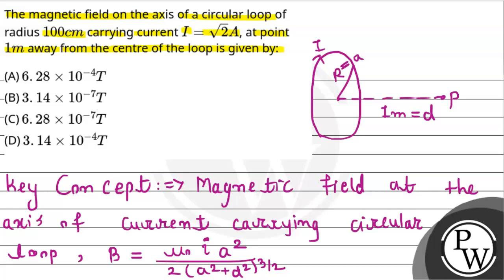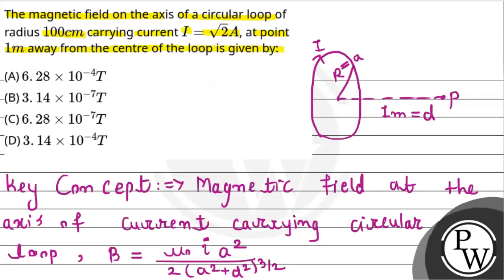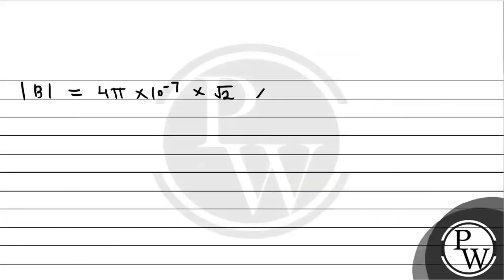The magnitude of magnetic field will be equal to μ₀, which has a value of 4π times 10 to the power minus 7, multiplied by the current flowing through the loop which is √2 amperes, multiplied by radius a squared.